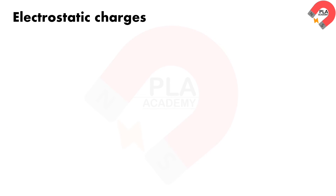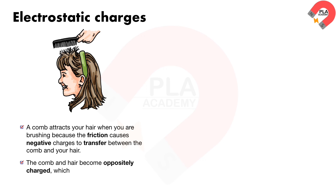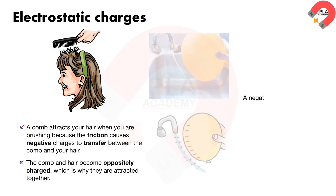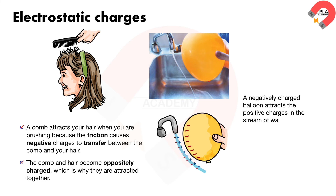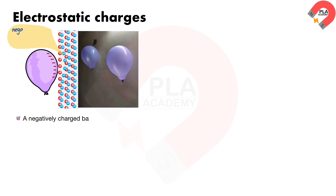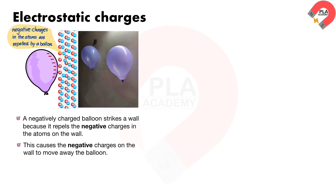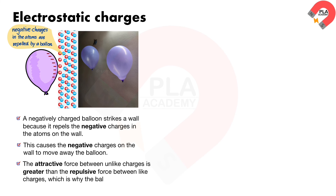Electrostatic charges. A comb attracts your hair when brushing because friction causes negative charges to transfer between the comb and your hair. The comb and hair become oppositely charged, which is why they attract. A negatively charged balloon attracts the positive charges in a stream of water, causing the stream to bend toward the balloon, because the attractive force between unlike charges is greater than the repulsive force between like charges. A negatively charged balloon also sticks to a wall because it repels the negative charges in the atoms on the wall, making the surface relatively positive.